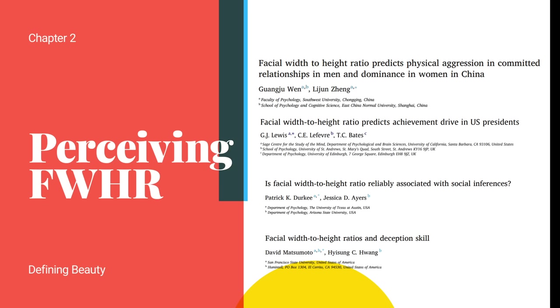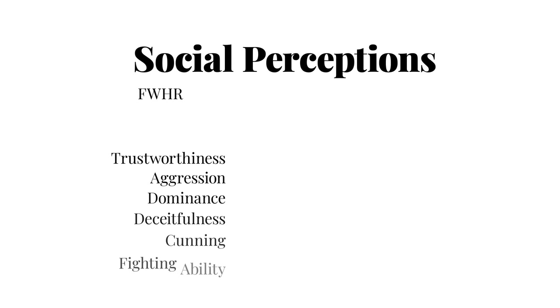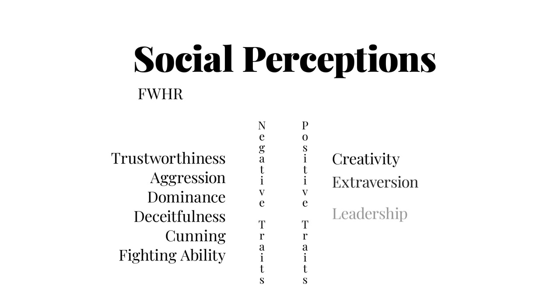The second topic is how does FWHR actually affect our social perceptions — how do we look at faces differently depending on the ratio? Most of the research regarding the FWHR is done within the realm of social perceptions, particularly on things like trustworthiness, dominance, and aggression. Some studies also try to link the measurement to creativity, though that's something that hasn't been looked at as much.